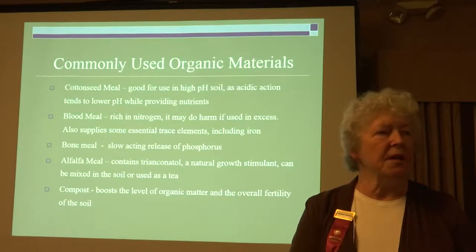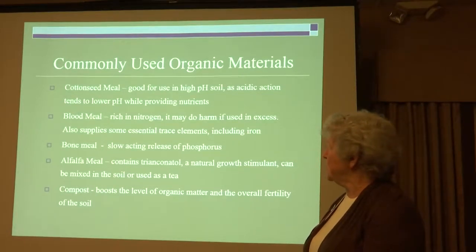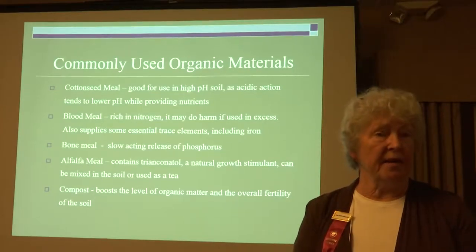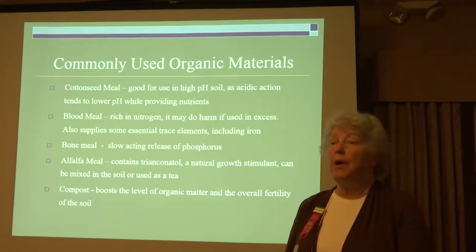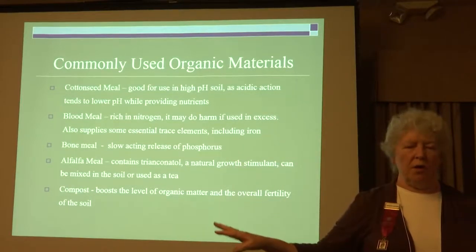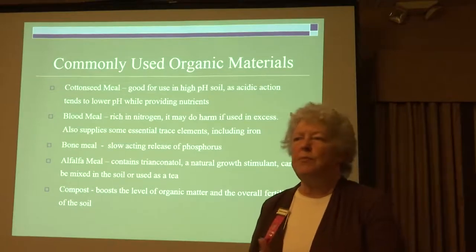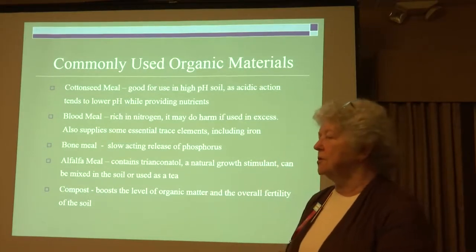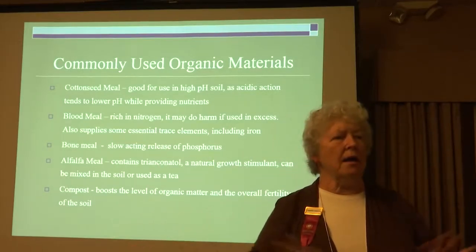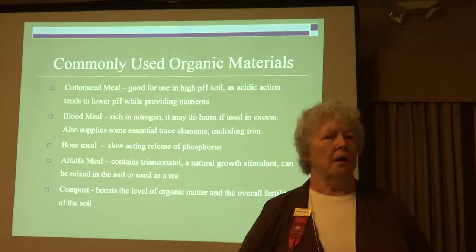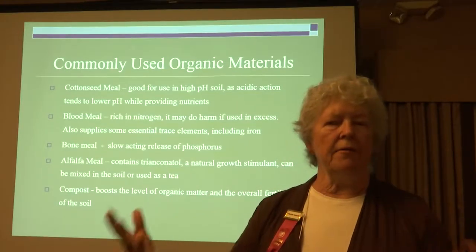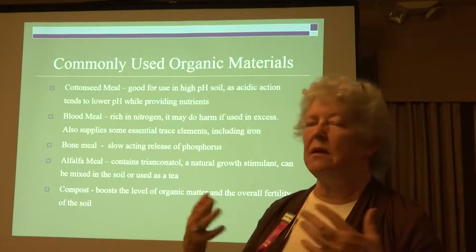Here are some organic materials you can use: cottonseed meal, blood meal, bone meal, alfalfa meal, homemade or store-bought compost, shredded bark, coffee grounds, and tea bags. California is coated with forests. You can even use chopped-up leaves and all kinds of stuff that will rot and feed the microorganisms.